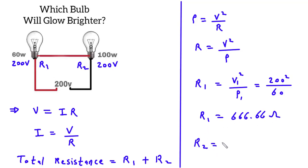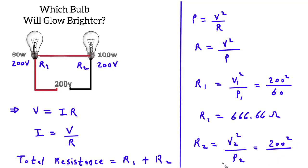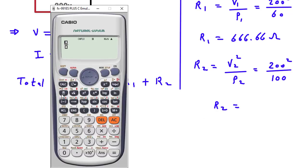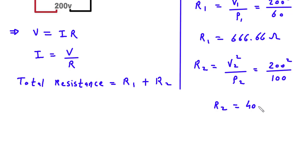Similarly, we will find the value of R2: V2 squared divided by P2. The voltage value is 200 and P2 value is 100. So R2 is equal to 200 squared divided by 100, which gives us 400 Ohm.